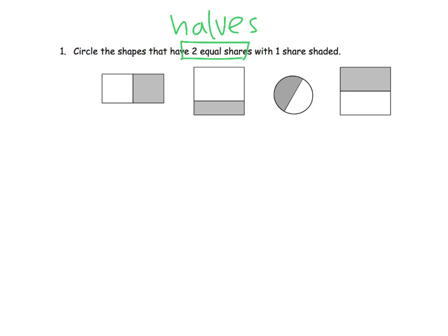And then, circle the shapes that have two equal shares with one shaded. So, where's a half? Well, that's good. That's kind of like the candy bar. This guy's no good. Why not? Well, he's no good because they're two pieces, but they're not equal shares. This one, what about this one?